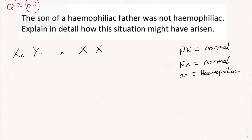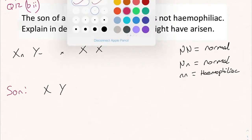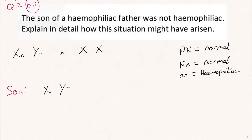So the son is going to have X and Y — nothing under the Y — and if he's not hemophiliac it means he has to have a capital N on his X chromosome. There's no way that big N came from the father, because the only thing that can come from the dad is the Y chromosome. The son is inheriting his X chromosome from the mother. If there's a capital N here, then one of the mother's X chromosomes also has to be capital N.